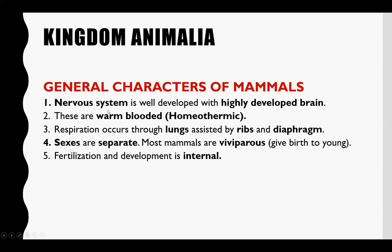Nervous system ان کا well-developed ہوتا ہے اور highly developed brain ان کے اندر موجود ہوتا ہے — ان سے زیادہ advanced اور large size کا brain کسی بھی vertebrate کے اندر موجود نہیں ہوتا۔ یہ warm-blooded animals ہیں، اپنا metabolic heat use کرتے ہیں، اپنا temperature high رکھتے ہیں اور اسے maintain بھی کرتے ہیں — homeothermic۔ Respiration جو ہے وہ lungs کے through ہوتی ہے۔